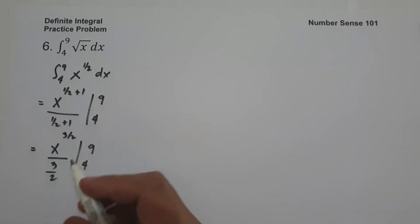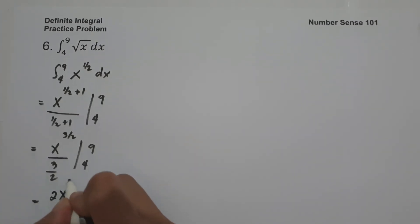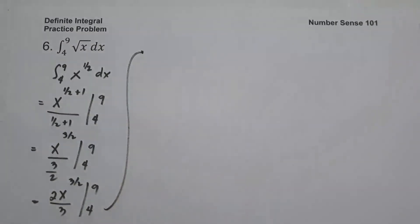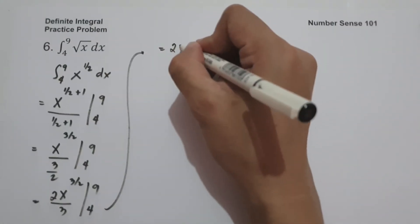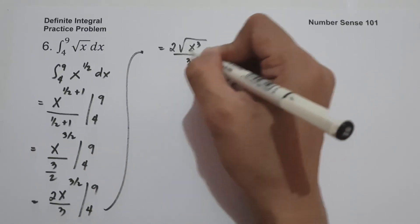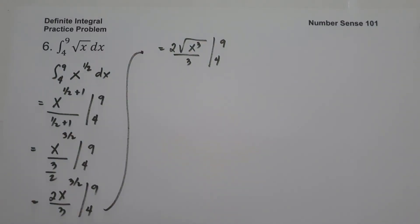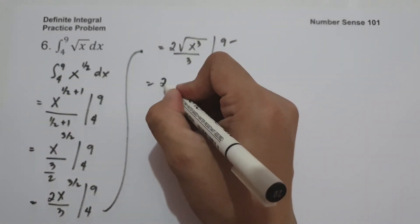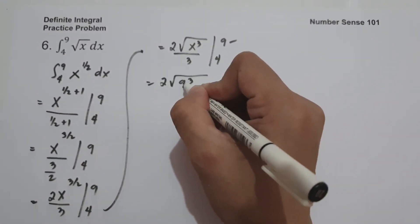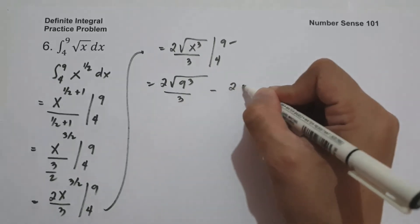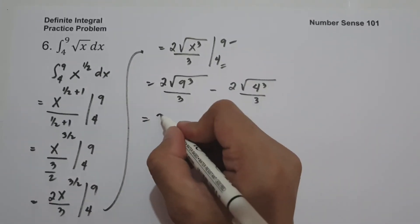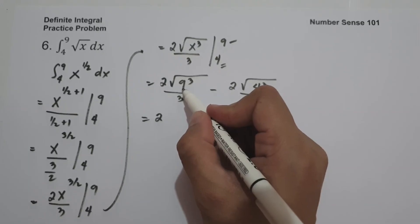Simplifying, this becomes 2x raised to 3/2 over 3, or in radical form, 2 times the square root of x cubed over 3, evaluated from 4 to 9. Substituting x equals 9: 2 times the square root of 9 cubed over 3. Substituting x equals 4: 2 times the square root of 4 cubed over 3.